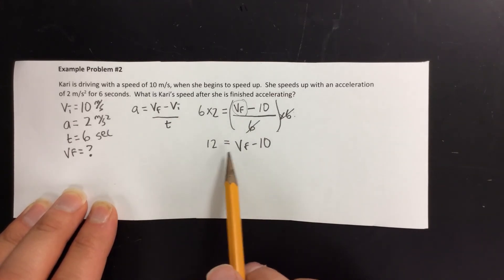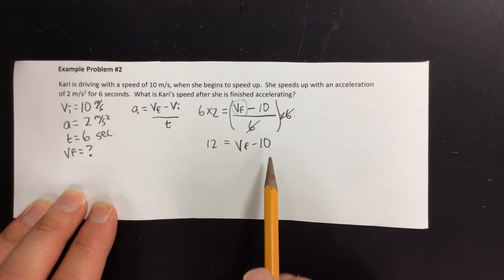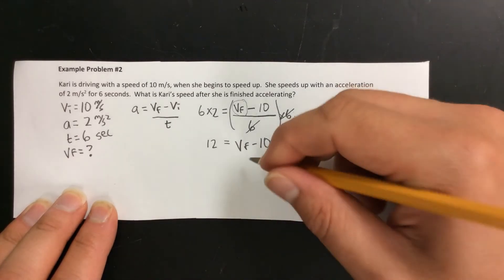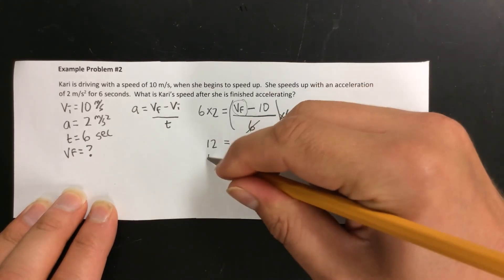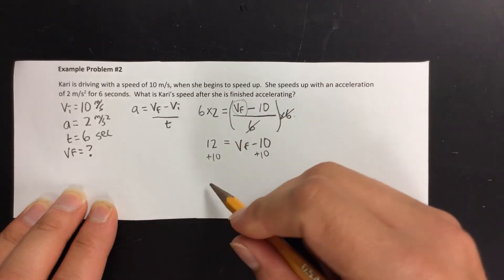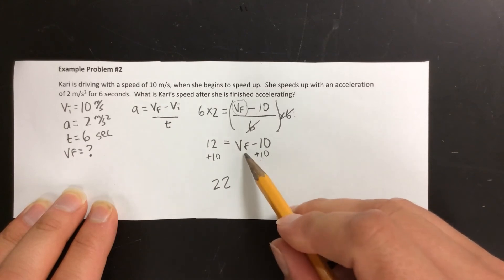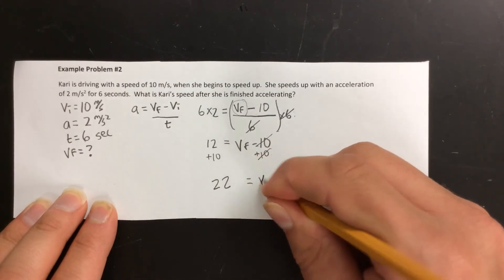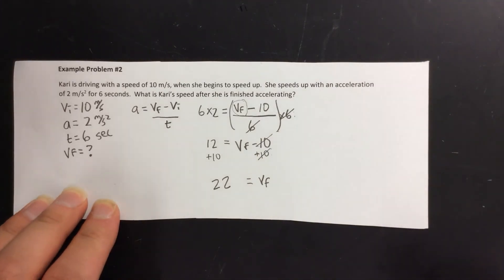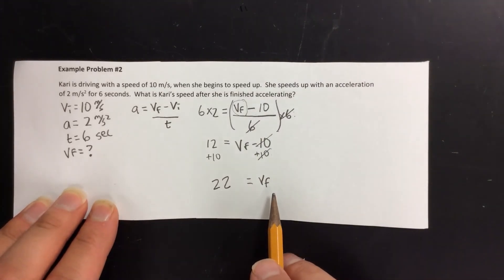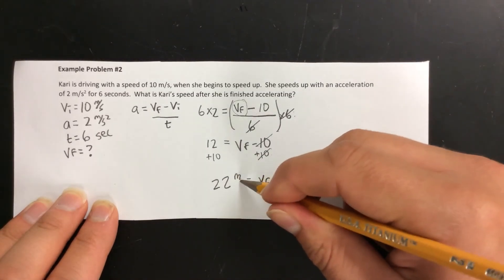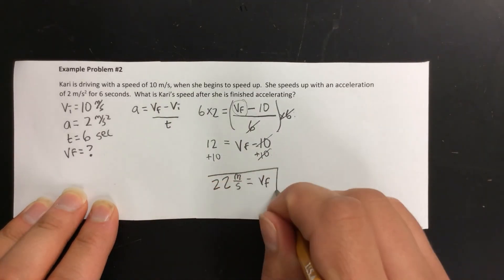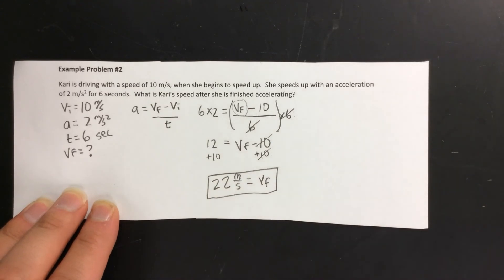Then over here our next step we have 12 equals VF minus 10. Well to get rid of this minus 10 we need to add 10 to both sides. So 12 plus 10 gives us 22. And VF minus 10 plus 10 gives us VF. So VF equals 22. And then finally we need our units to go along with this. Since this is a velocity our units will be meters per second.